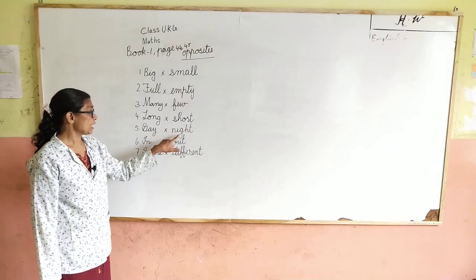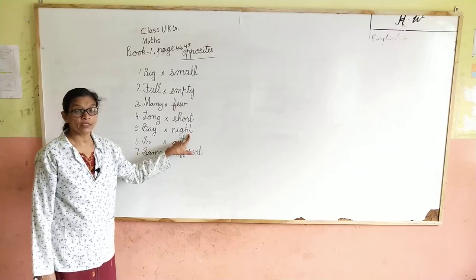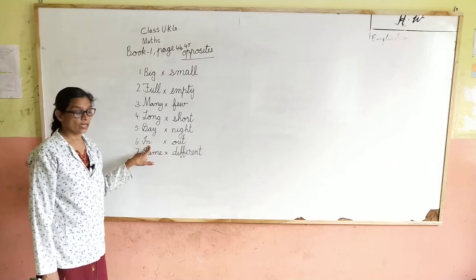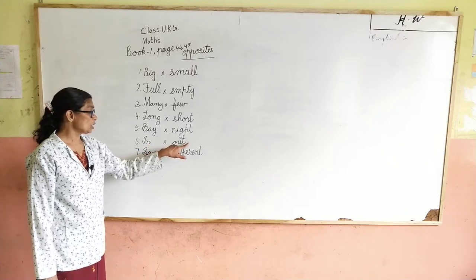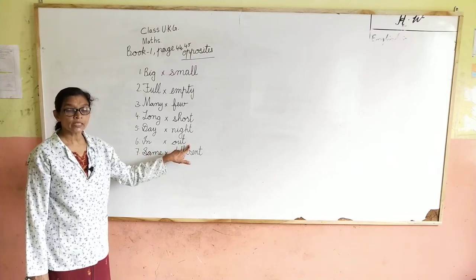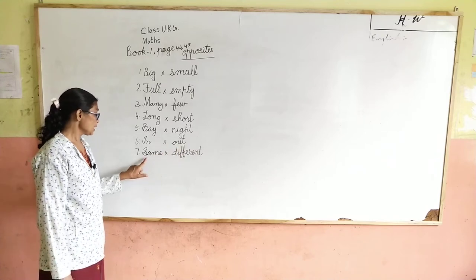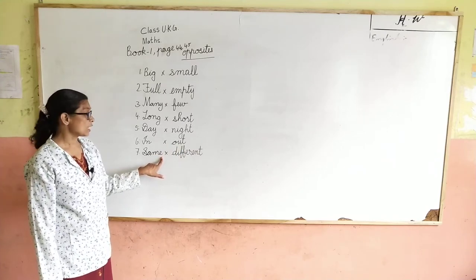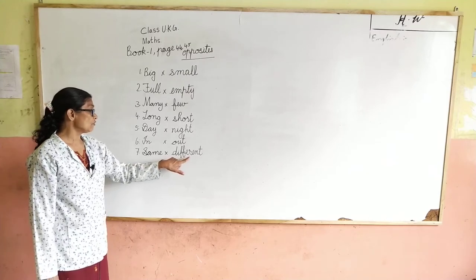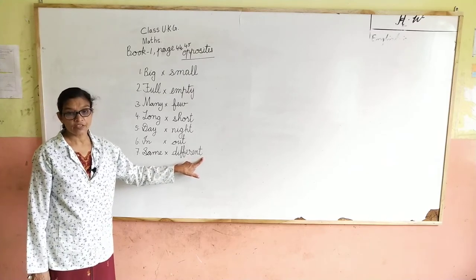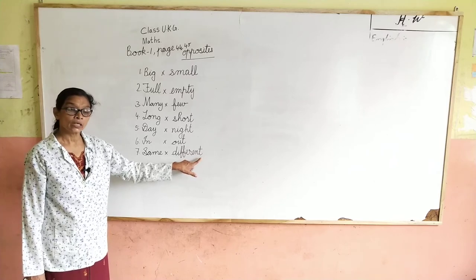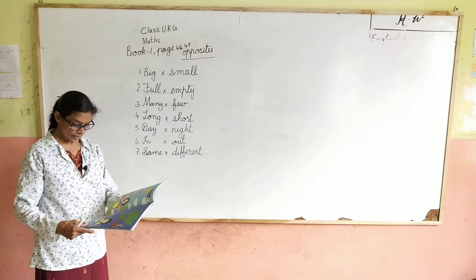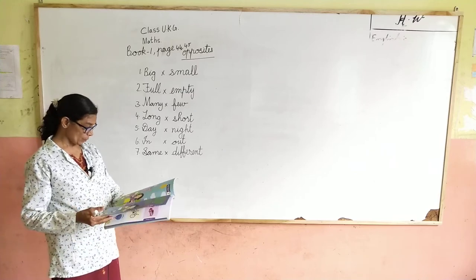D-A-Y, day. Day means din. N-I-G-H-T, night. Night means raat. I-N, in. In means andar. O-U-T, out. Out means bahar. S-A-M-E, same. Same means ek jaisa.